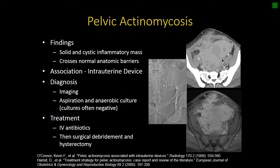It can be mistaken for a large malignancy, and one of the key features is a recently removed or long-indwelling intrauterine device. It can be a difficult diagnosis to make clinically because aspiration and cultures are often negative, as it's an anaerobic organism. Treatment is IV antibiotics to knock down the infection, and oftentimes surgical debridement — whether a hysterectomy or pelvic exenteration — is required for definitive therapy.